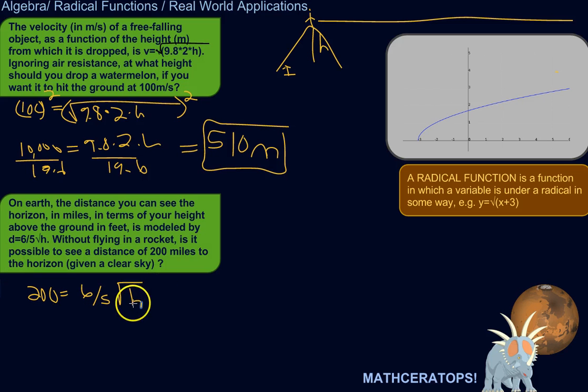So, let's get H by itself. So, it's being multiplied by 6 fifths. So, we can multiply both sides by 5 sixths to undo that. 5 sixths.